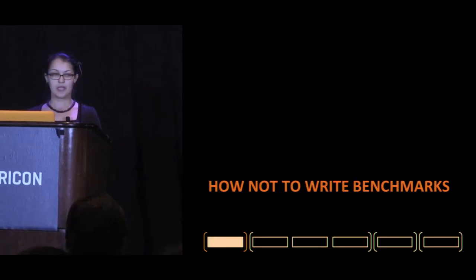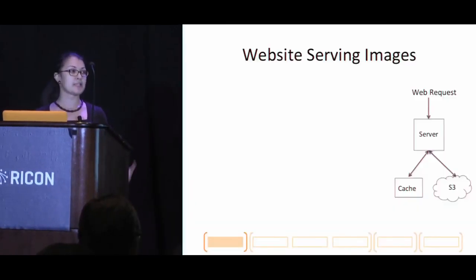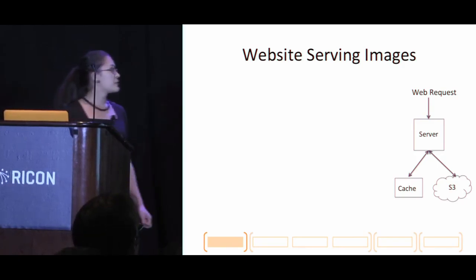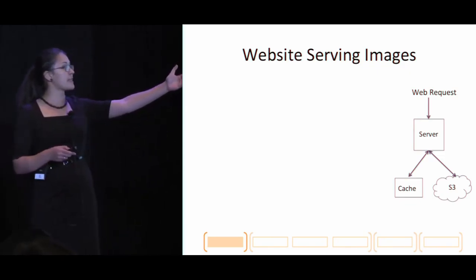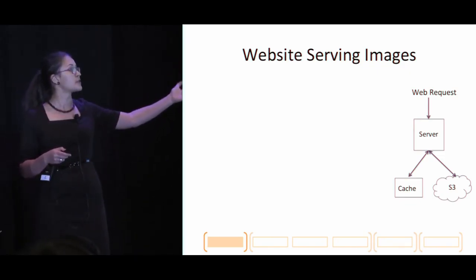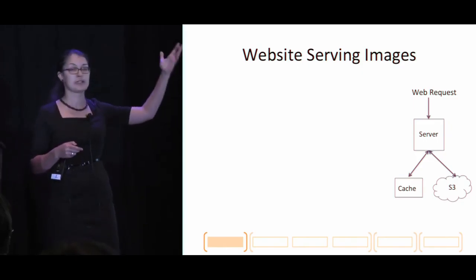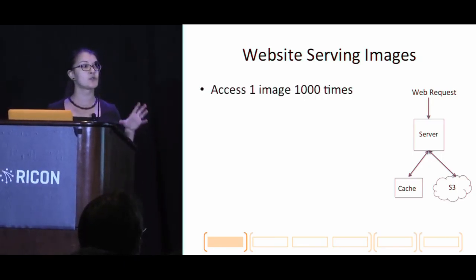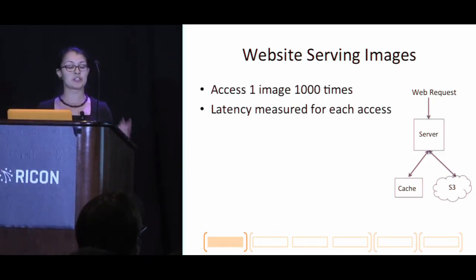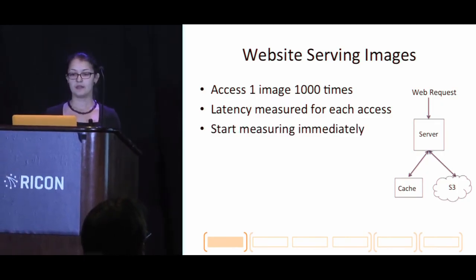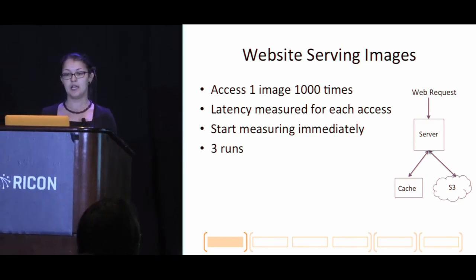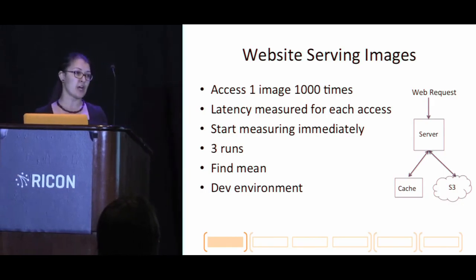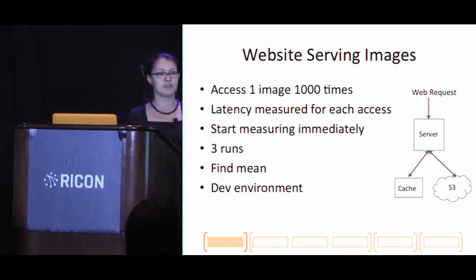Let's talk about how not to write benchmarks. Imagine you have a website serving images and images are slowest to load, so you want to benchmark those. A request comes in to the server, and the server has two options: fetch the image from the cache or fetch it from S3. To benchmark this, we'll measure access to one image 1,000 times, measure latency for each access, start measuring immediately, do three runs, find the mean, and do this in our dev environment because our production cluster is too busy.